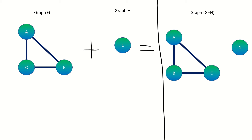Essentially, from a disjoint union of two graphs, we just get a graph comprised of a copy of each graph we applied the disjoint union to, with no vertices linking to vertices outside their copy. Now that we've covered disjoint unions, let's dig into what this right distributive law means.